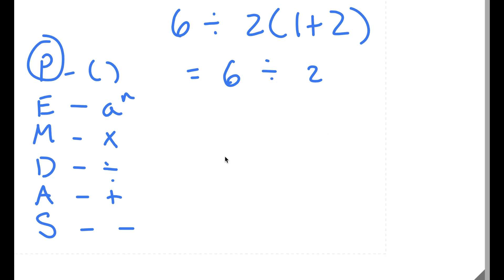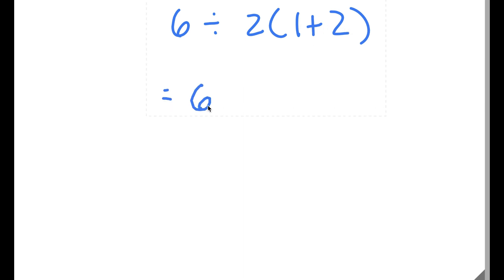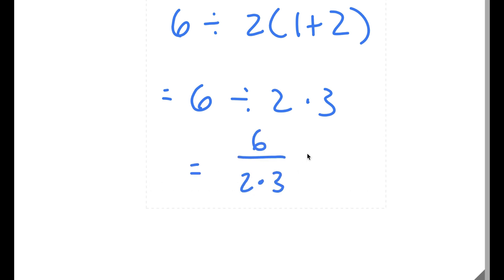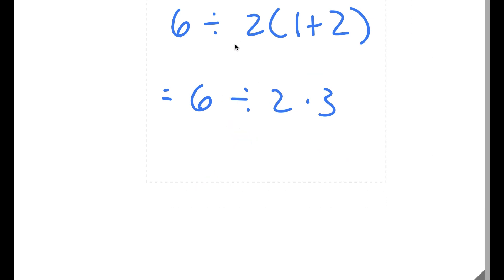Now, what people used to do to get the wrong answer — and this was actually during the 1900s — is they would first correctly add 1 plus 2 in the parentheses to get 6 divided by 2 times 3. But then instead of doing 6 divided by 2 first, they would do 6 over 2 times 3, treating 2 times 3 as 6, giving 6 over 6 which equals 1. This is the wrong method, because between multiplication and division, whichever comes first is done first — and here, division comes first.